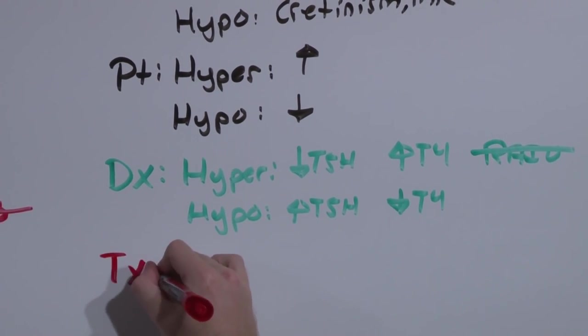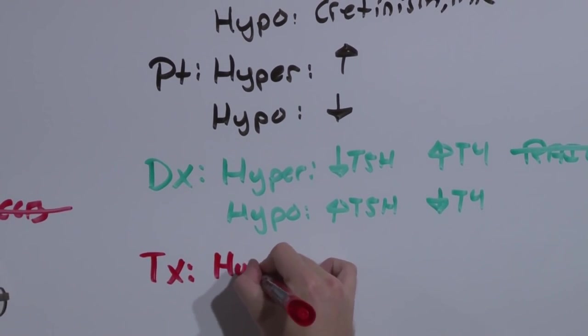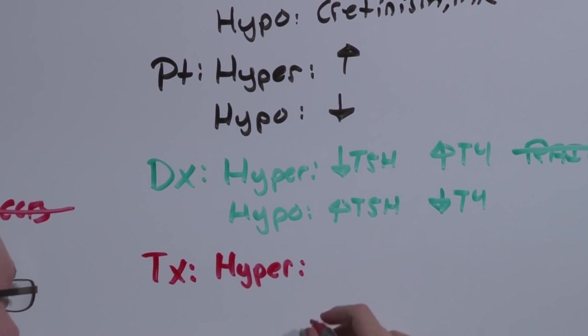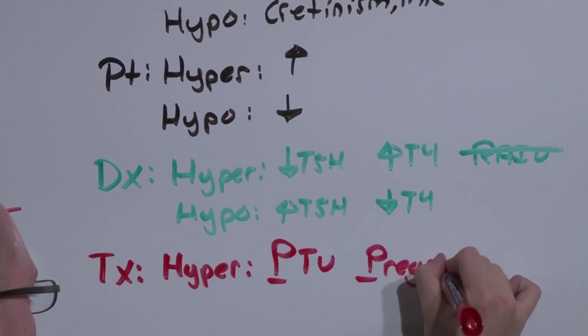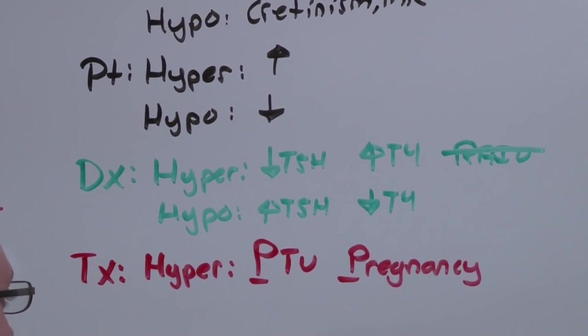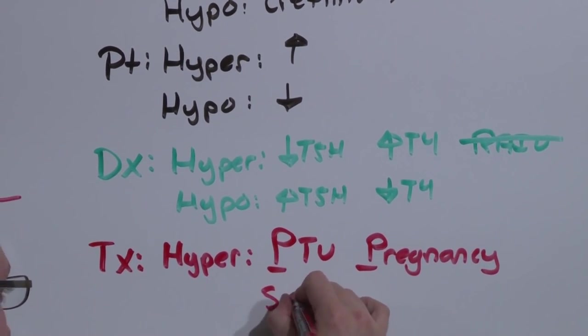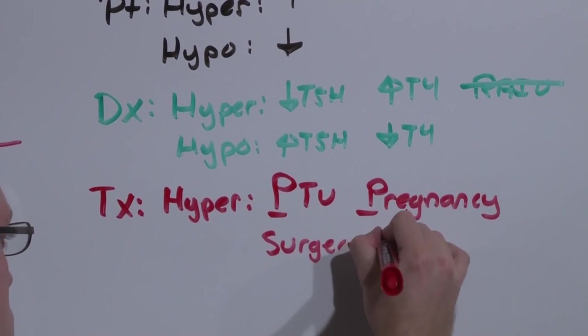To treat, hyperthyroid tends to have a lot of options. The only one that's safe is PTU, Safe in Pregnancy. PTU is Safe in Pregnancy. And if you're going to do surgery, it should be done in the second trimester.